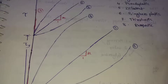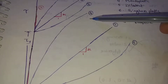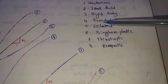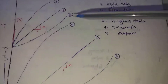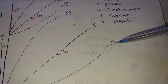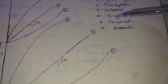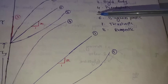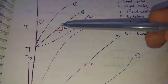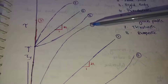The fourth type is pseudoplastic. The fifth one is dilatant. The sixth one is Bingham plastic.